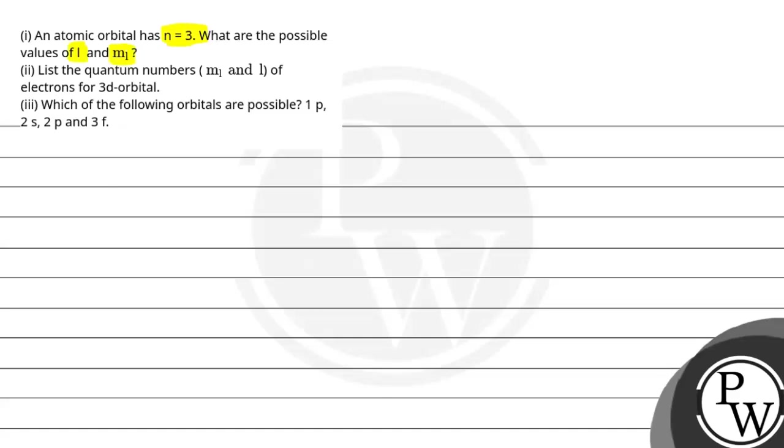So we have to give n value, we have to tell l and ml. Next, we have to list the quantum numbers ml and l for 3d orbital. And next is which of the following orbitals are possible: 1p, 2s, 2p or 3f?